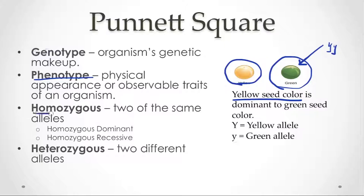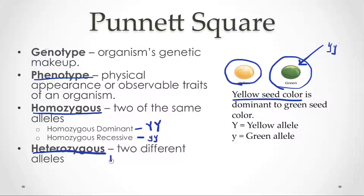The term homozygous — homo meaning two of the same — refers to having the same alleles. There are two ways an organism can be homozygous: homozygous dominant, meaning both alleles are the dominant form (big Y, big Y in our seed color example), or homozygous recessive, where both copies are the recessive form (little y, little y). The other alternative is heterozygous, meaning two different alleles — capital Y, little y — which is the only way to be heterozygous in this particular example.